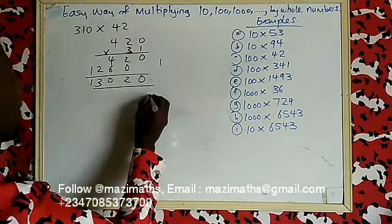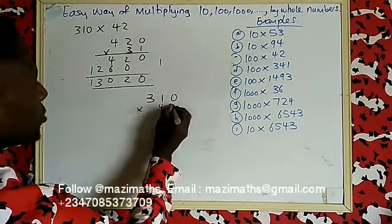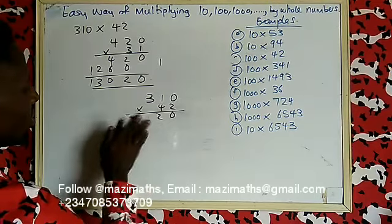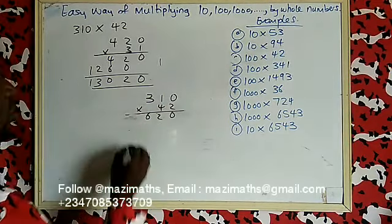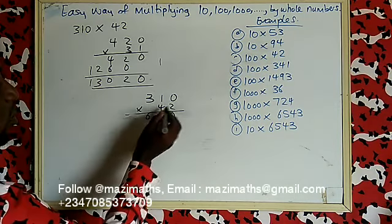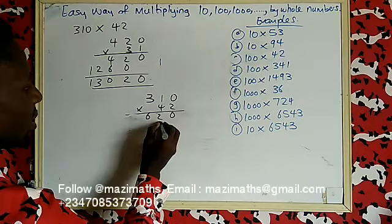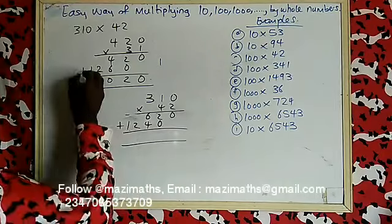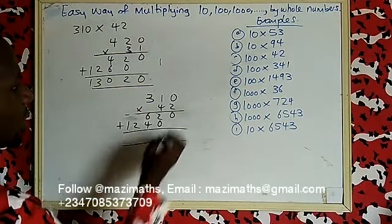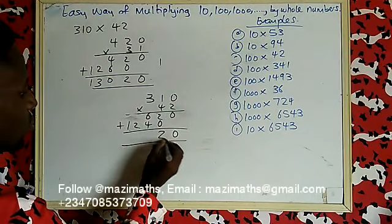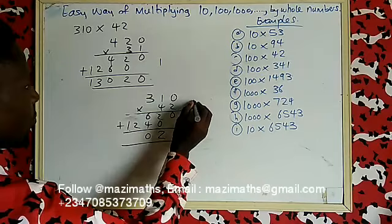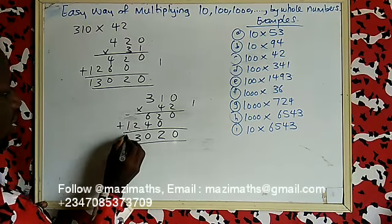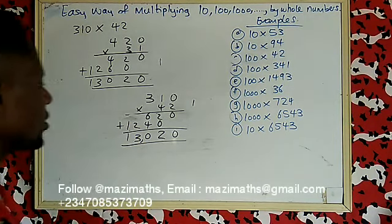To confirm with the short method for 310 times 42: use two to multiply all numbers — two times zero is zero, two times one is two, two times three is six. Then use four to multiply — four times zero is zero, four times one is four, four times three is twelve. Adding: zero plus nothing is zero, two plus zero is two, six plus four is ten — write zero keep one, one plus two is three, then one. Your answer is 13020, the same result.